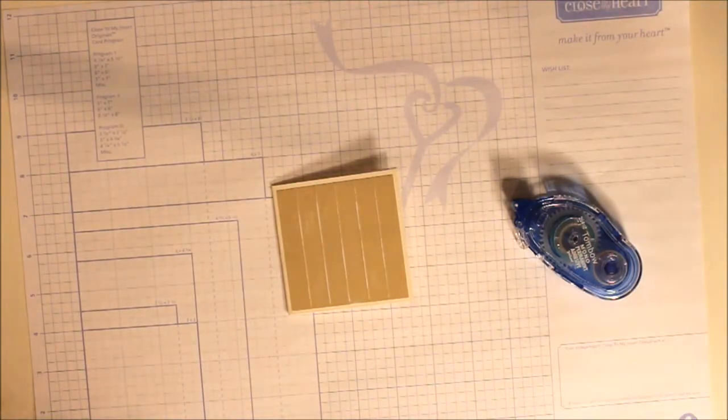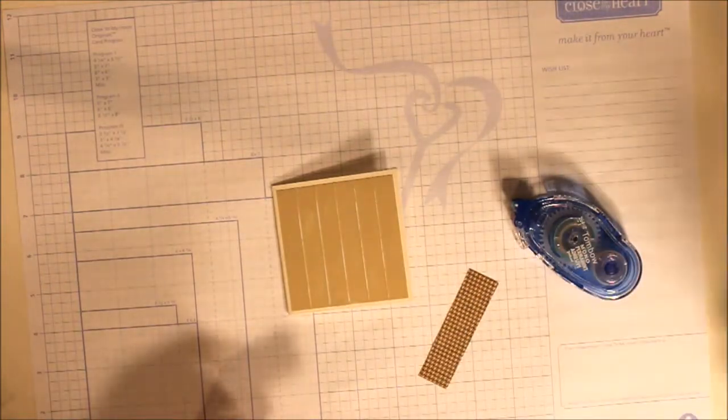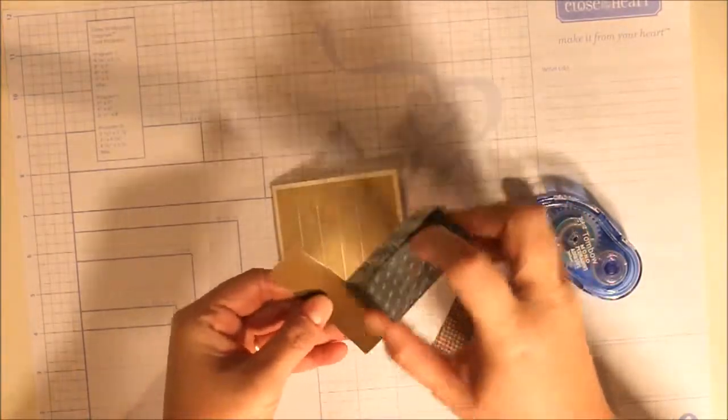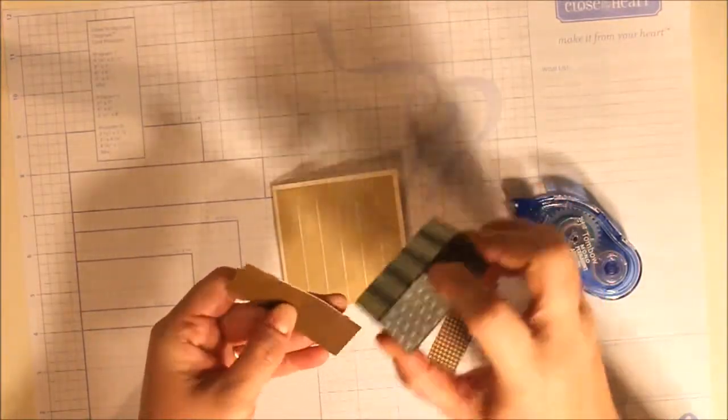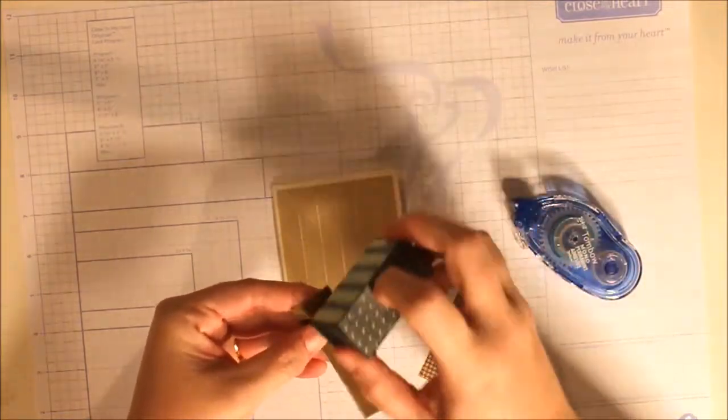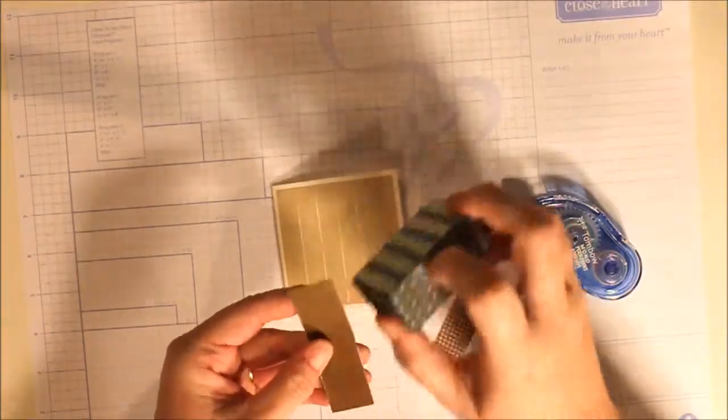And now we're going to take the two pieces, the piece of chocolate and the piece of houndstooth and just sand the edge of that. We really only need to do the long sides of the chocolate because the short sides will be covered up by the houndstooth.